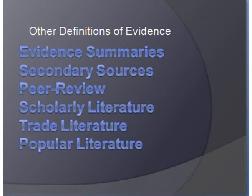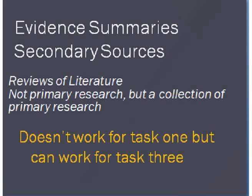Here are some of the typical ones that confuse us: evidence summaries, secondary sources, and the terms peer-reviewed, scholarly, or trade journals. I want to just spend a minute talking about those other sources — other types of evidence and other processes that get in the way of understanding what we're looking for with primary research.